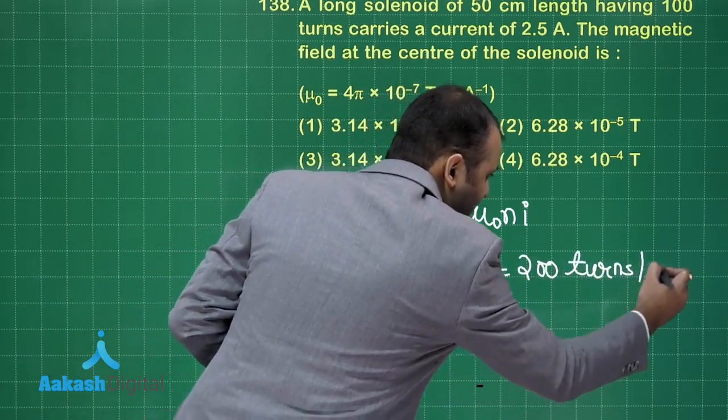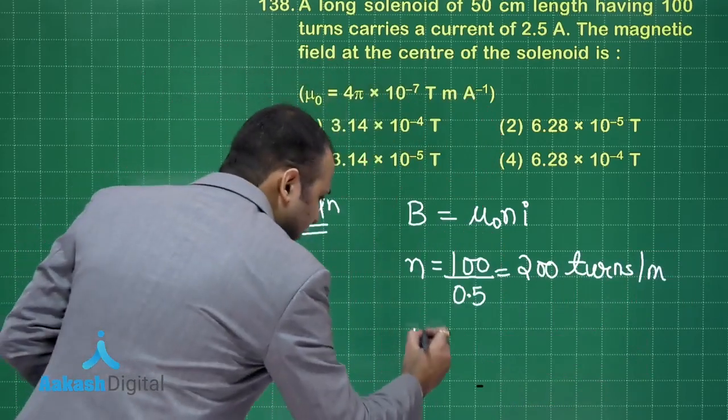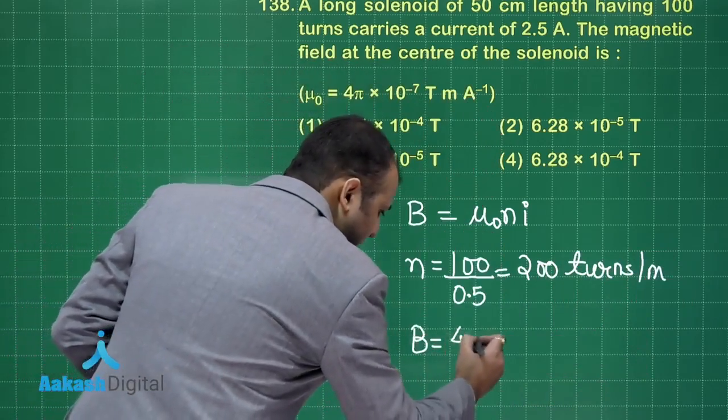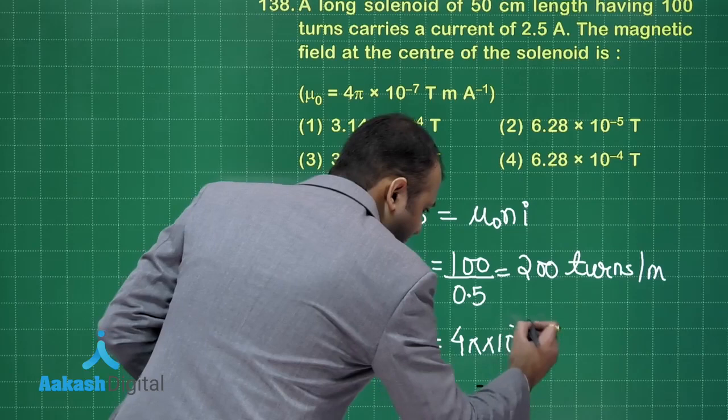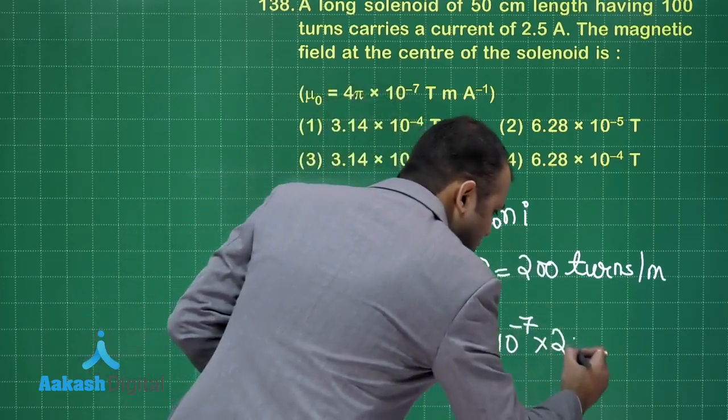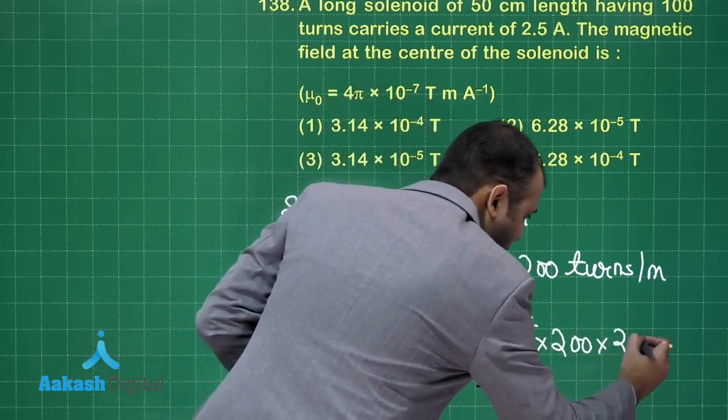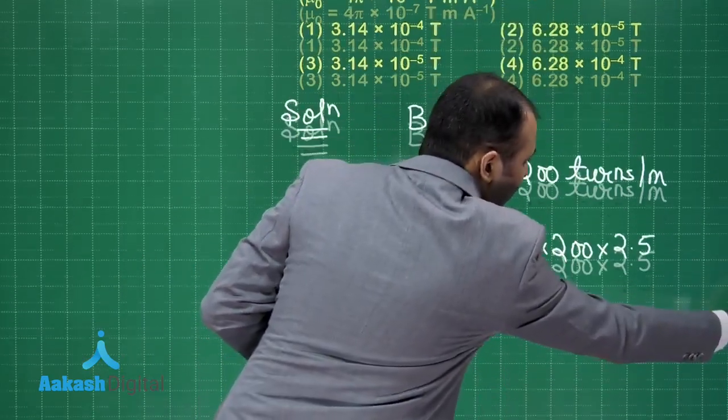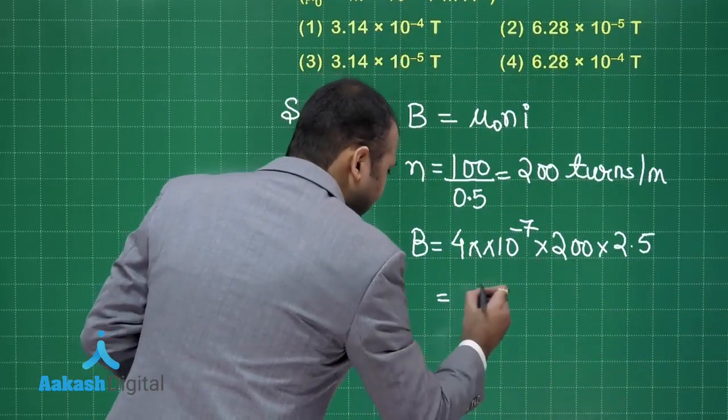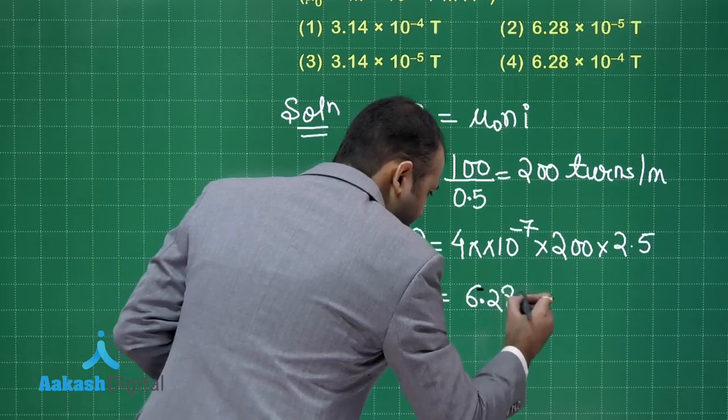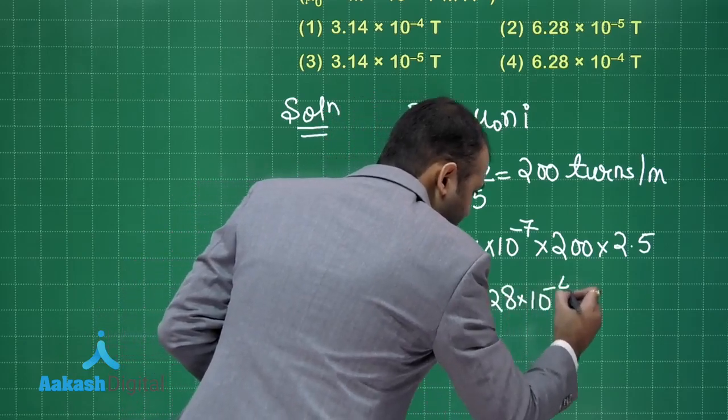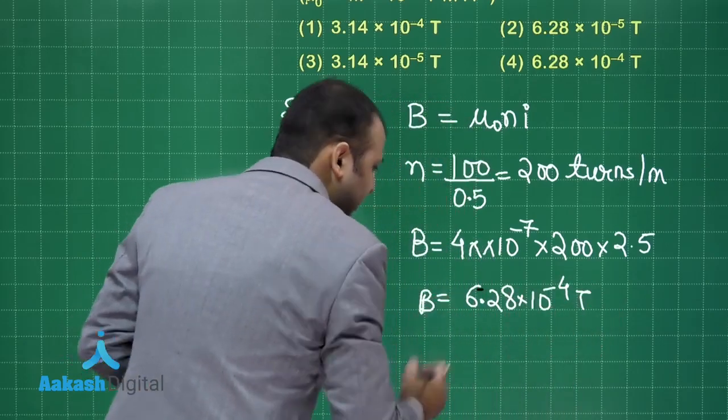Sometimes students make this mistake. When you put values here, then it will be 4 pi into 10 to power minus 7 into N ki value which is 200 and current is given as 2.5 ampere. When you put values here, the answer will be 6.28 into 10 to power minus 4 tesla because it's magnetic field.